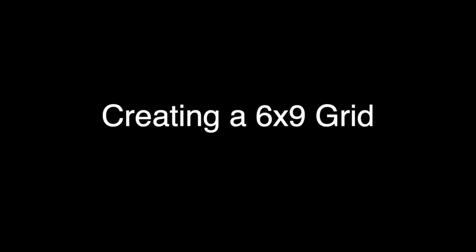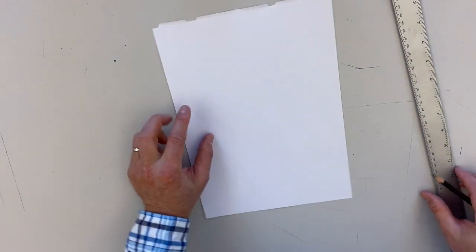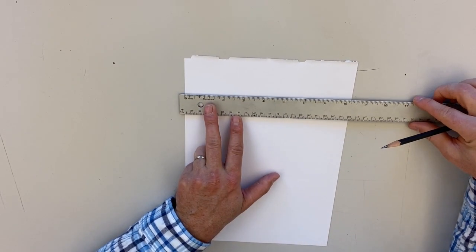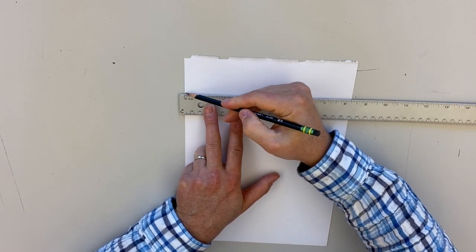We're going to be creating a 6x9 grid on the type of paper that you were given. The paper you have is actually something like 8 and almost a half by 11 and almost a half.